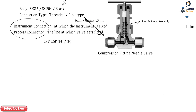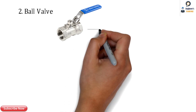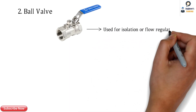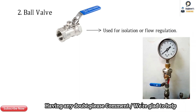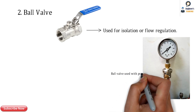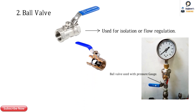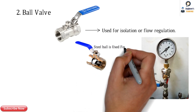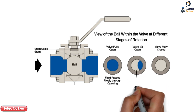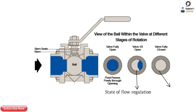Moving ahead, the next is the ball valve, which we've seen in various pipe applications. The ball valve is used for both isolation and flow regulation. Here, a pressure gauge is mounted inline with the ball valve, same as the needle valve arrangement. In the sectional view, we can see a steel ball used for isolation. As the knob is turned, the ball moves through three stages: fully open, partially open for flow regulation, and fully closed for isolation.